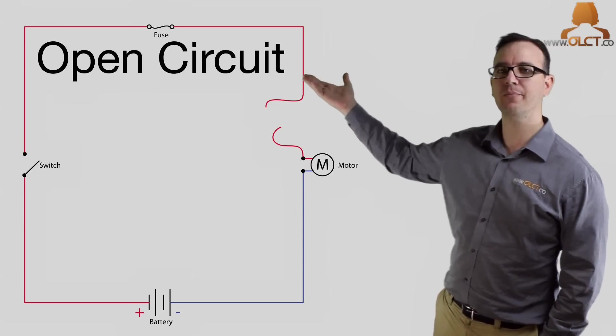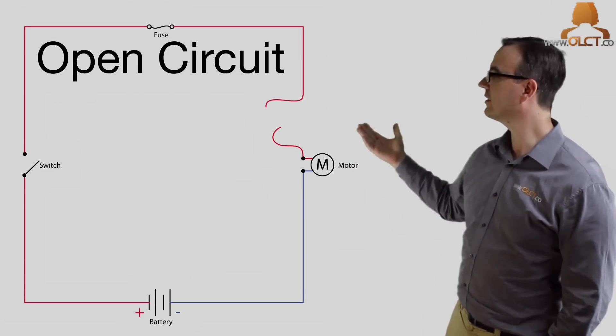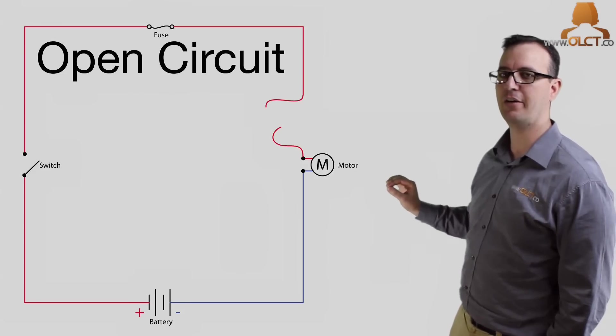An open circuit, so there's no current flow in the circuit. There's no electrical connection between the power supply and the earth, so there's zero current flow.